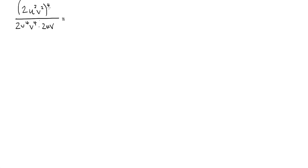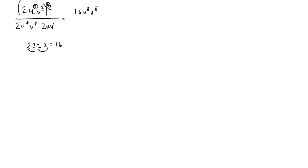2 to the fourth: 2 times 2 times 2 times 2. That's not 8 — it's 4 times 4, which is 16. So the numerator becomes 16u to the eighth, v to the eighth. Remember, power of a power means you multiply: 2 times 4 is 8, and 2 times 4 is 8.